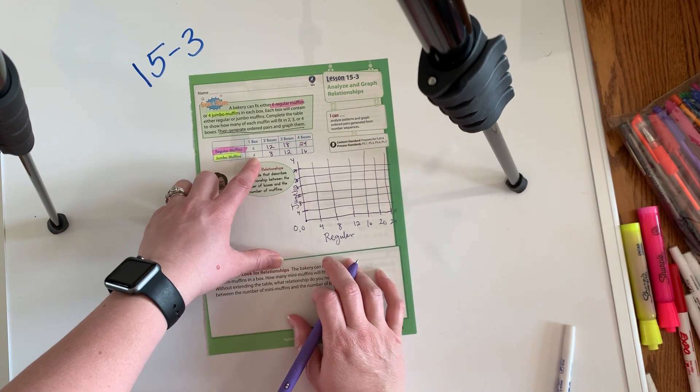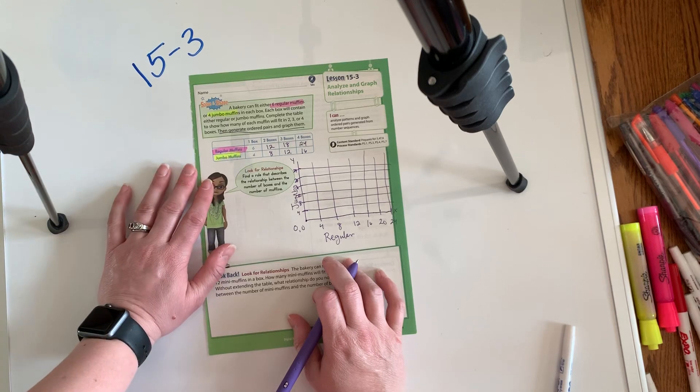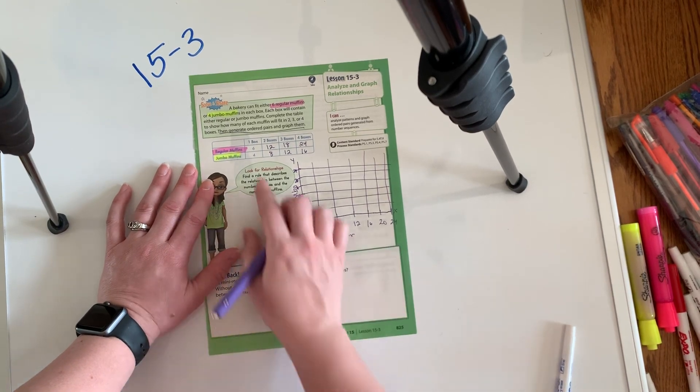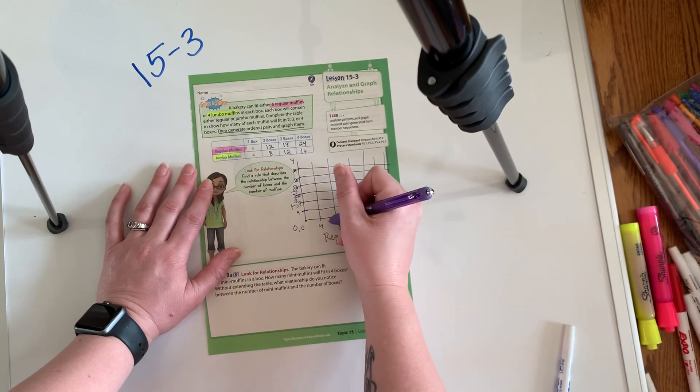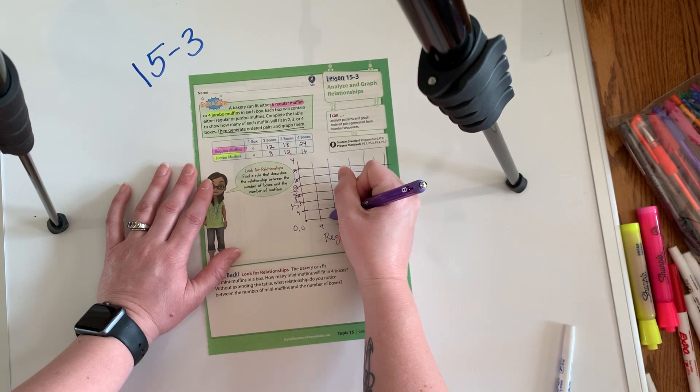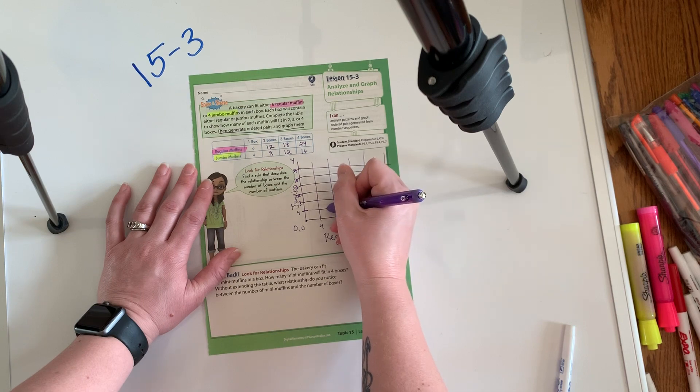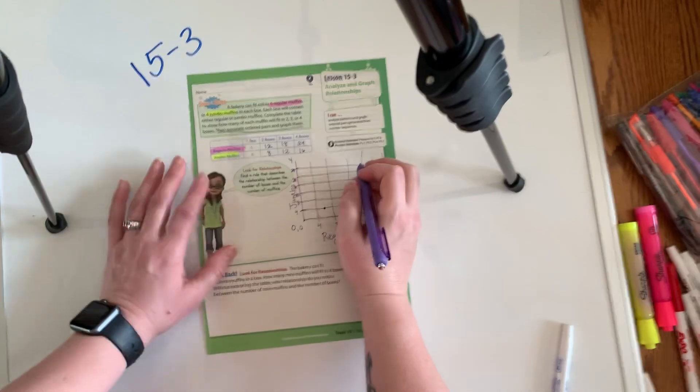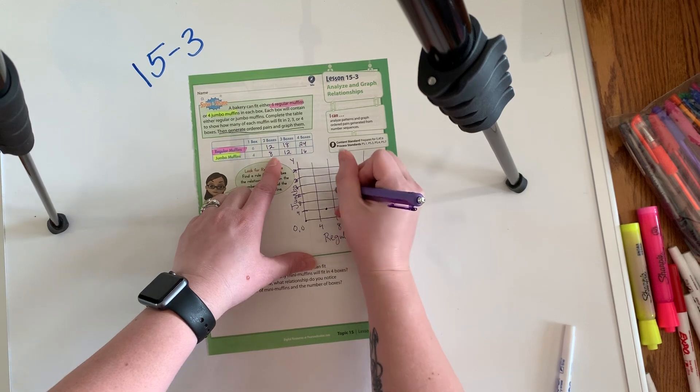So we're going to go six comma four. Oh, I just realized there's no six on there. It's the only one I don't have, but it'll be right between the four and the eight. So that's fine. So six comma four is going to look like this. So this is six and this is four. See how six is right between the four and the eight and then eight, 12.